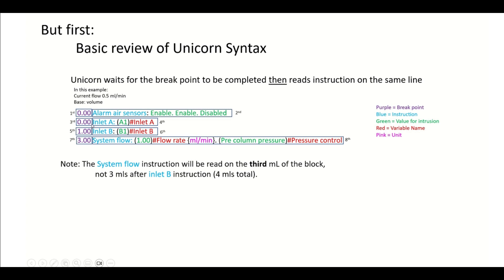Then because it says zero here again, unicorn is just going to not even notice it and read the inlet A instruction for the fourth little bit. Then after that, it's going to see this one here. So that's the first mil it's going to wait for. It's going to wait for two minutes because we're going at 0.5 mils a minute and the base is volume. After it's gone for those two minutes and completed that first mil, it will read this inlet B instruction, which is the sixth little bit of the method.